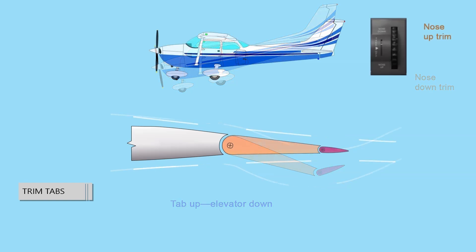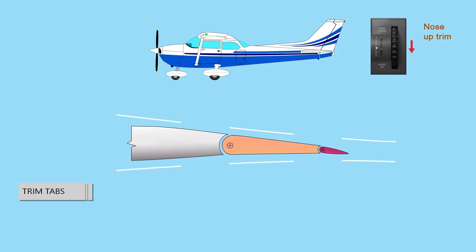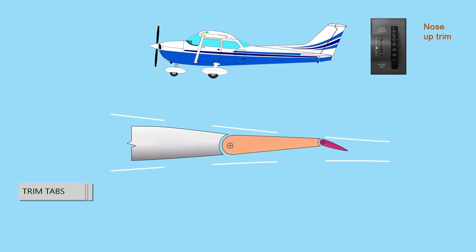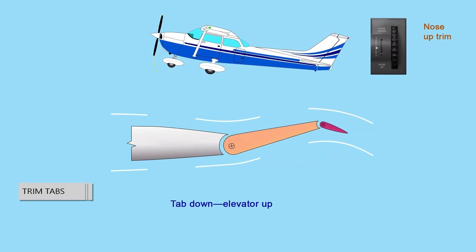If the trim tab is set to the full nose-up position, the tab moves to its full-down position. In this case, the air flowing under the horizontal tail surface hits the tab and forces the trailing edge of the elevator up, reducing the elevator's angle of attack. This causes the tail of the aircraft to move down and the nose to move up.